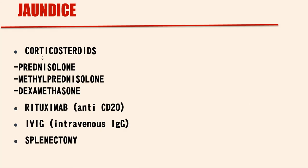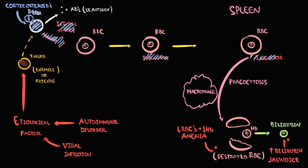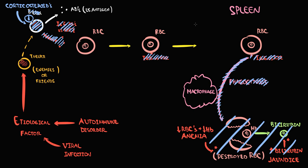The first treatment options are corticosteroids such as prednisolone, methylprednisolone, and dexamethasone. Corticosteroids stimulate myelopoiesis and inhibit lymphopoiesis. When we prescribe corticosteroids, they induce apoptosis of lymphocytes, so the amount of B lymphocytes decreases. With decreasing B lymphocytes, autoantibody production decreases. The lower the amount of immunoglobulins against red blood cells, the lower the rate of phagocytosis by macrophages, and thereby the lower the red blood cell destruction — resulting in a higher red blood cell count.